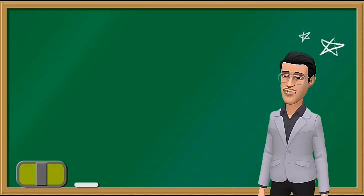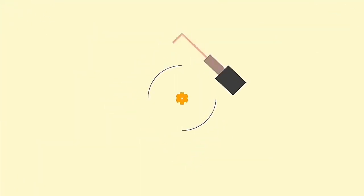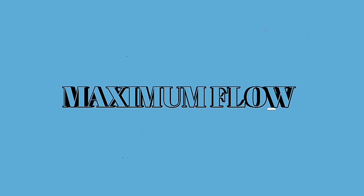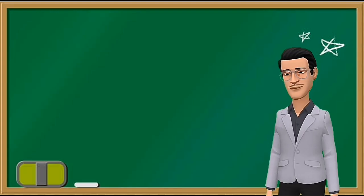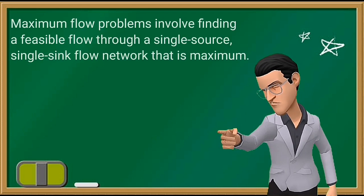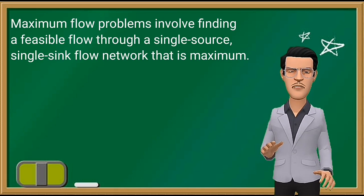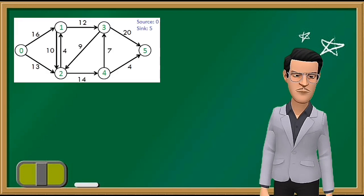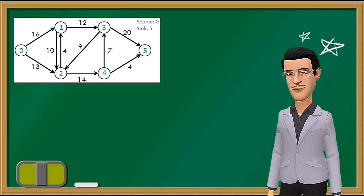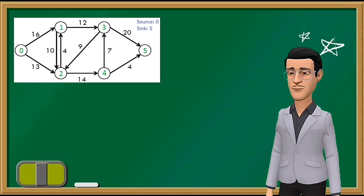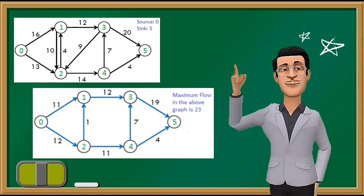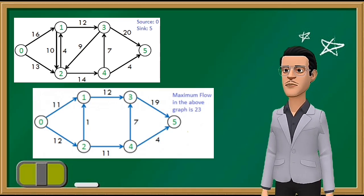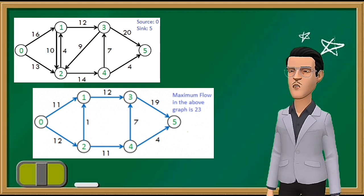In graph theory, maximum flow problems involve finding a feasible flow through a single source, single sink flow network that is maximum. Let's take an image to explain how the above definition works. Each edge is labeled with capacity, the maximum amount of stuff that it can carry.